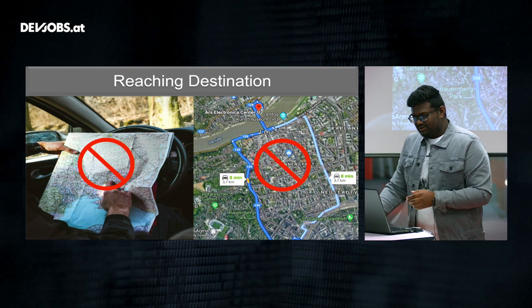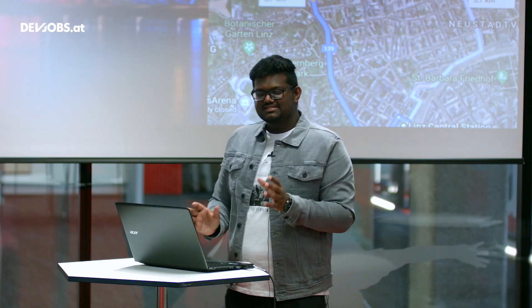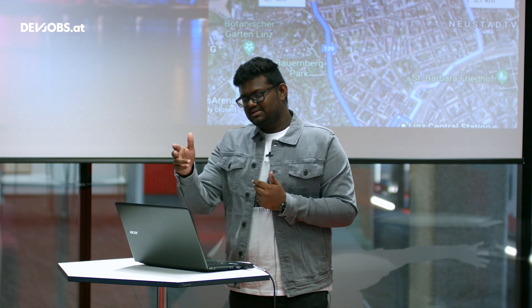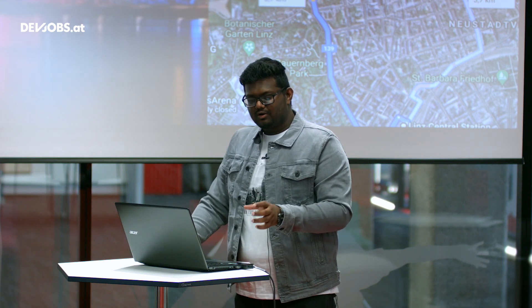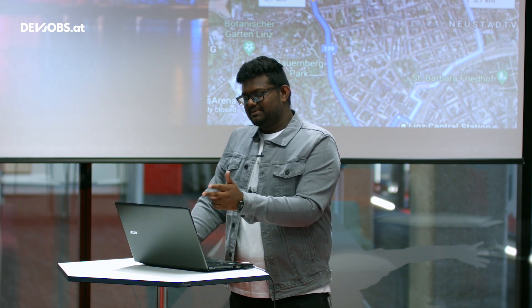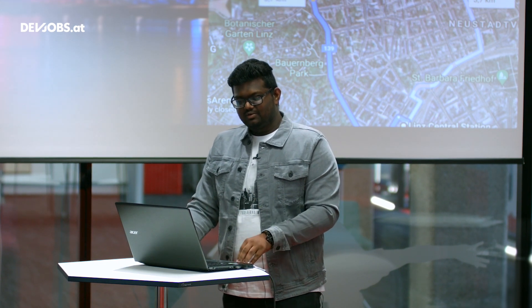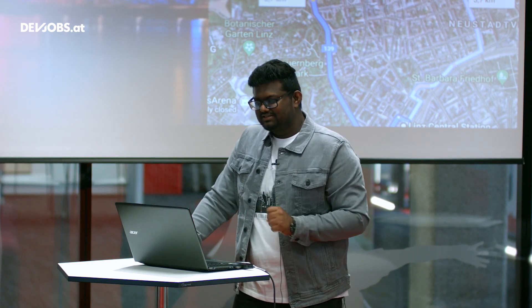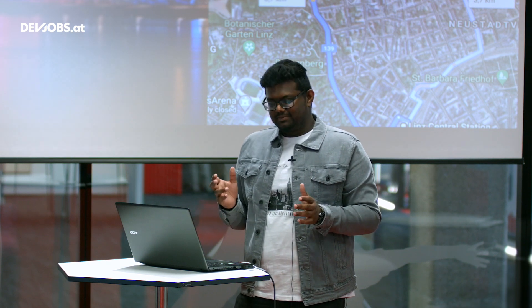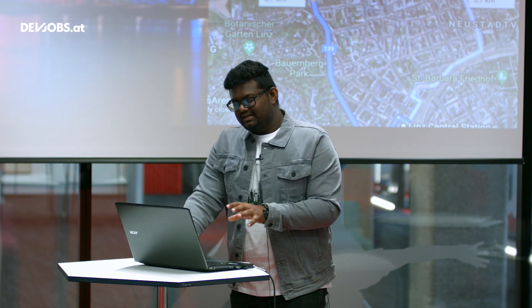Since I already explored the city, I have a map of it in my brain. When I start navigating, the first thing my brain does is localize myself — what is the distance between my location and the Hauptbahnhof. Once I come out of the train station, I localize the difference between my location and the bus station. With that proximity I can localize myself on the map my brain previously created, and find the location of Ars Electronica.